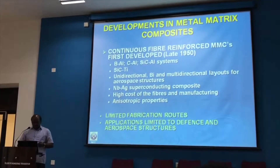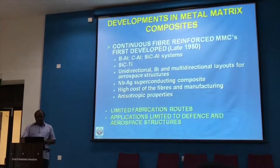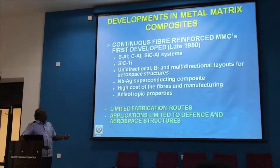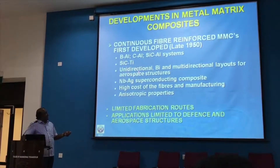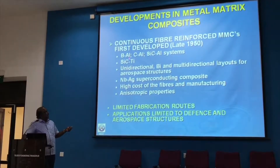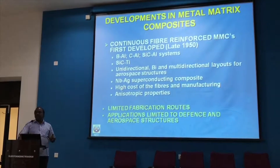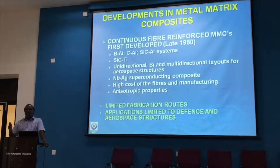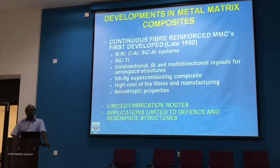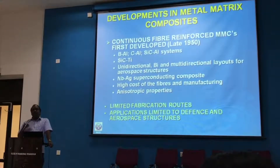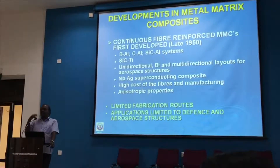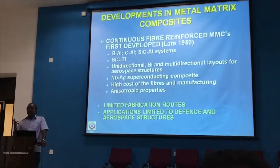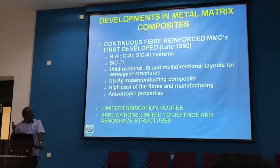These materials have very high strength because the fibers provide very high strength to the aluminum. Pure aluminum has a strength of around 80 MPa, and alloys can go up to maybe 400 MPa. But if you reinforce with carbon fiber, the strength will go to 1100 MPa — almost a multi-fold increase in the strength of aluminum.